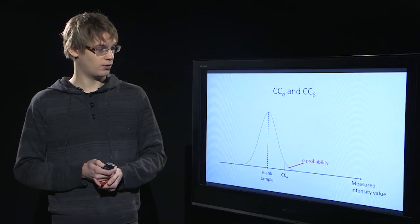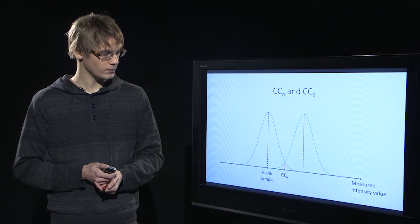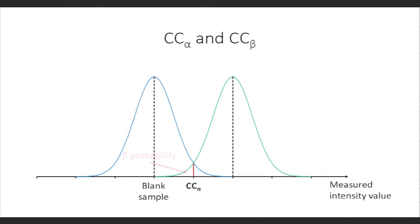Now we can look at or find another distribution that has a beta probability of receiving results below CCα although the mean value is above CCα.